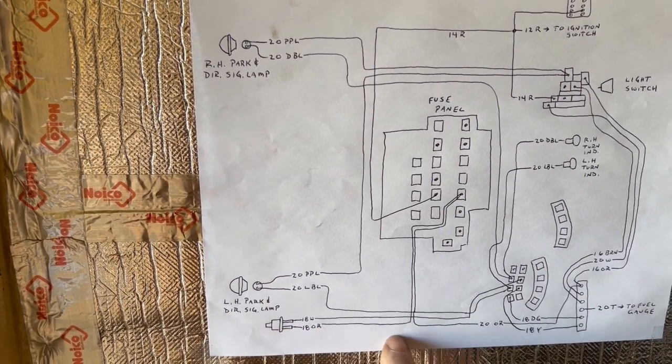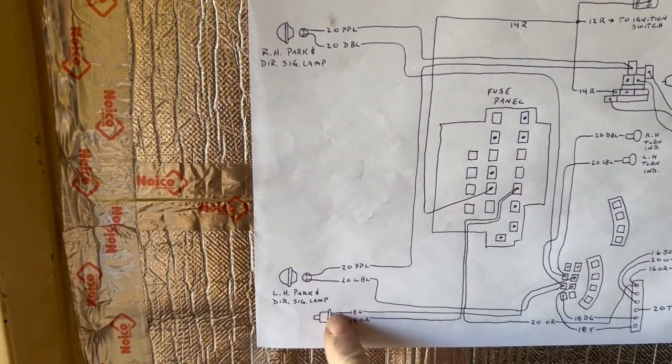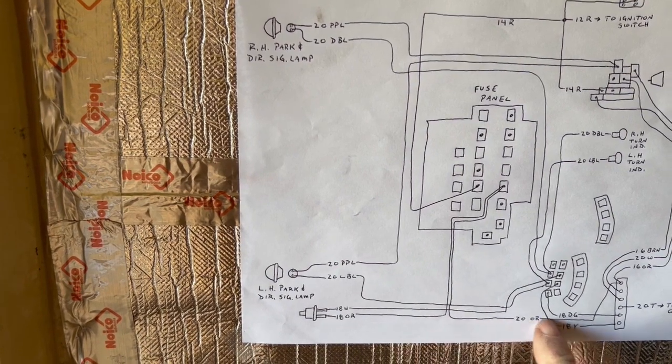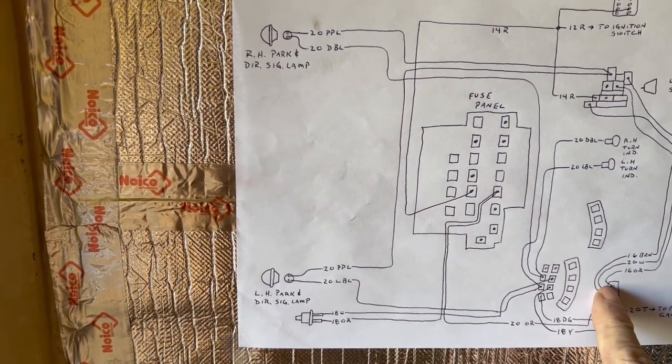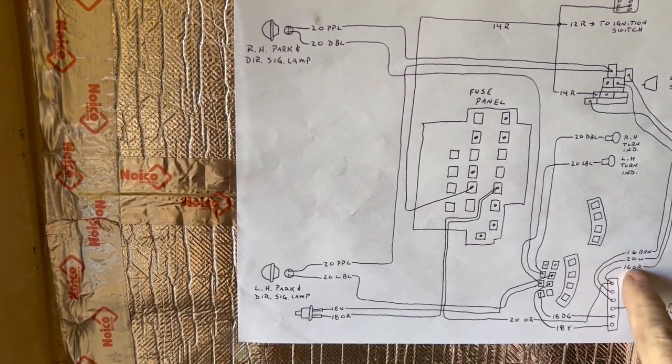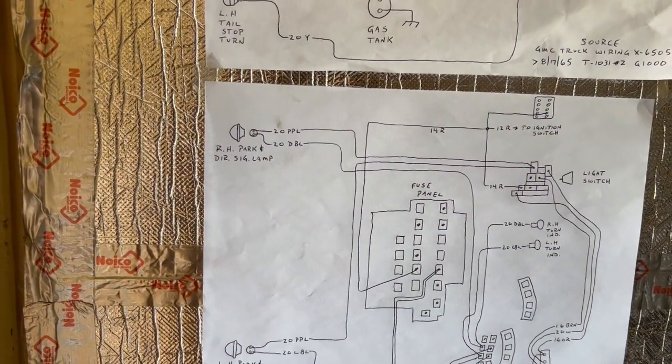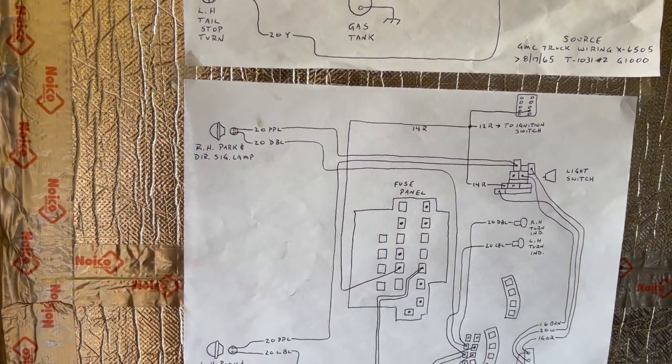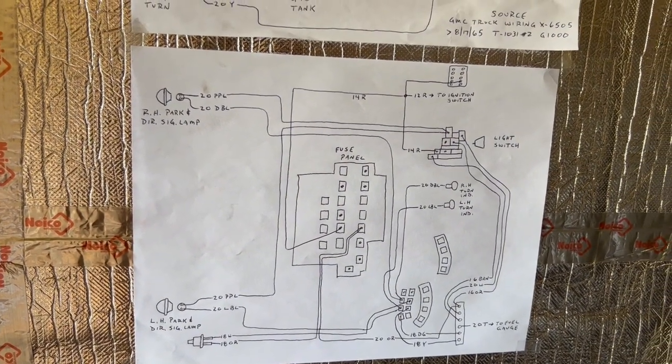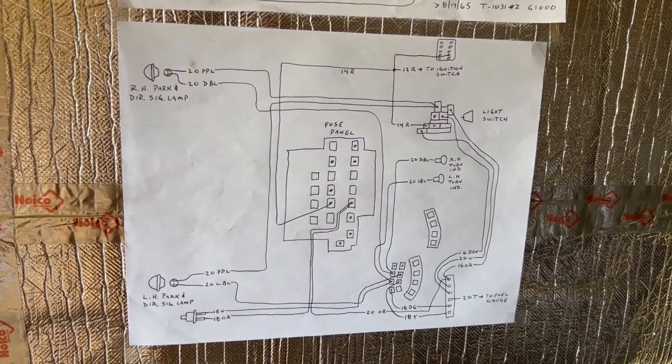So we are going to double check to make sure that we got power to the brake light switch. And then, from the brake light switch, we will trace it back to the orange wire, which also goes up to the headlight switch. And then we are going to put it on time-lapse and go from there.